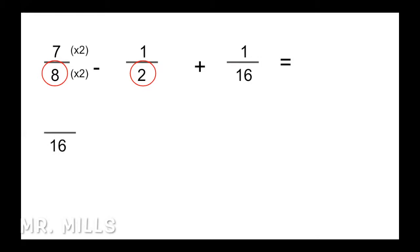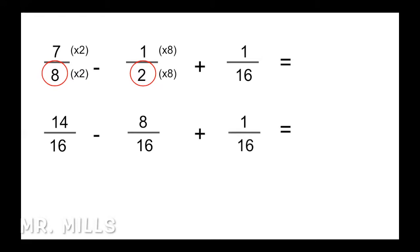For the next fraction, 2 times 8 gives us 16, and we do to the top what we do to the bottom — 1 times 8 is 8. We copy down the rest of the equation and pull over our symbols. Now we do the math across the top: 14 minus 8 plus 1. 14 minus 8 is 6, and plus 1 is 7. So 7 sixteenths — 7 is odd, so we can't reduce further.